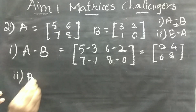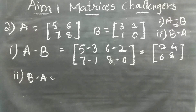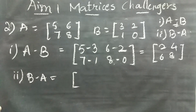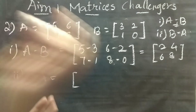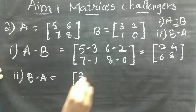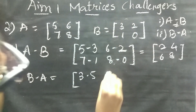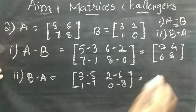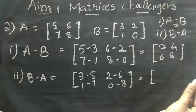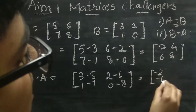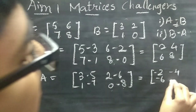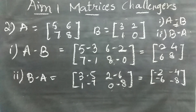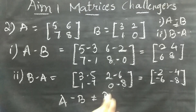Now the second part: B minus A. Here the scenario is just reversed — 3 minus 5, 2 minus 6, 1 minus 7, 0 minus 8. Using normal integer subtraction: 3 minus 5 is minus 2, 2 minus 6 is minus 4, 1 minus 7 is minus 6, 0 minus 8 is minus 8. Both results are different, so hence A minus B is not equal to B minus A.